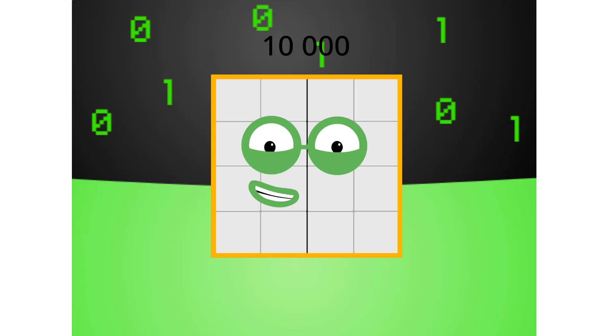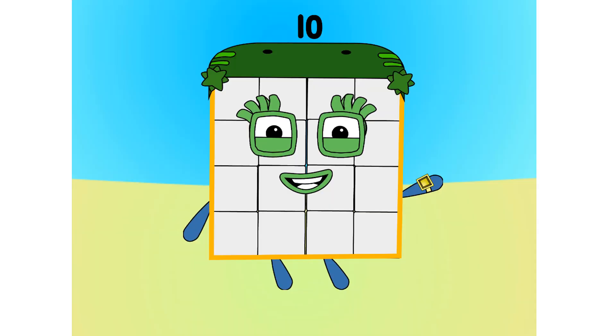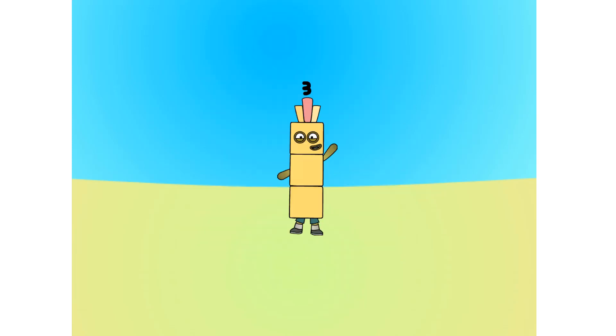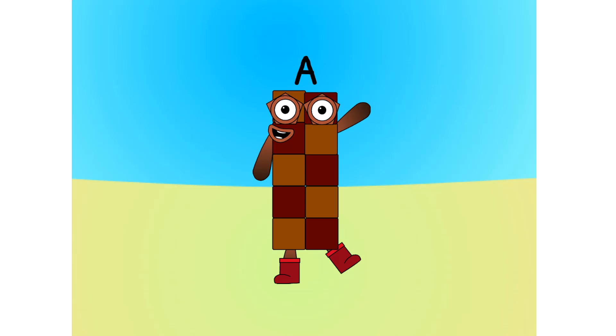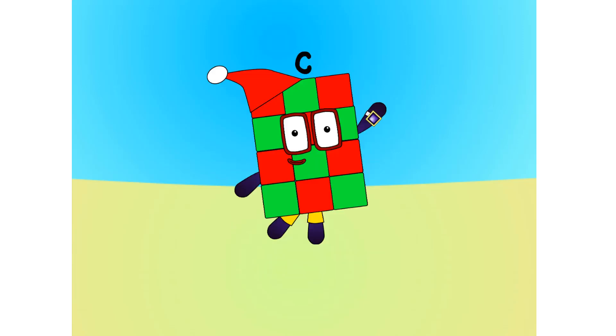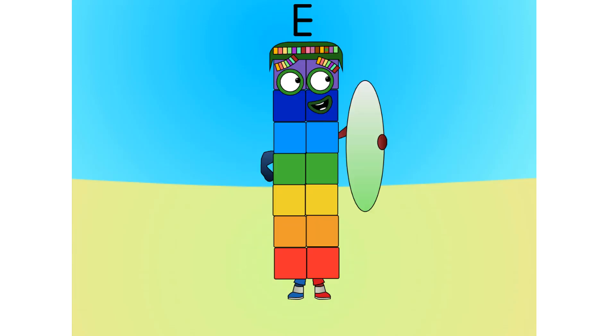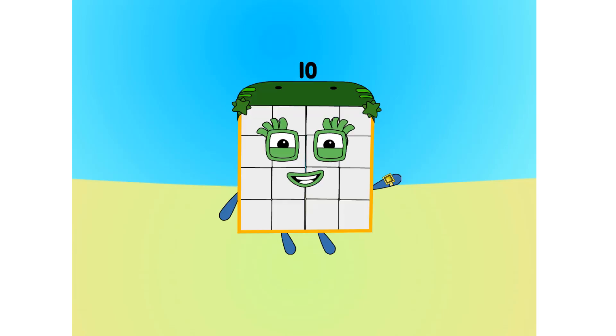Let's move on to the next base. This is base 16. Also known as hexadecimal, or hex. If this is base 16, there needs to be 16 digits. 1, 2, 3, 4, 5, 6, 7, 8, 9, A, B, C, D, E, F, 1, 0.